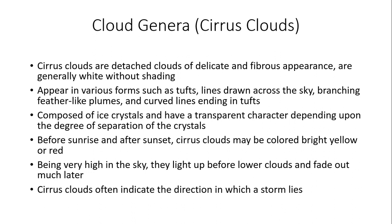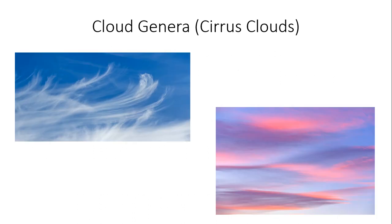Cirrus clouds often indicate the direction in which a storm lies. Here are some examples of cirrus clouds. You can notice the wispy, feathery look — very feathery and amazing on a summer or winter day. In the lower right, you'll notice the pink and purple hue caused by the sun's light at sunset. As the sun descends below the horizon, it illuminates these clouds because they're so high up in the sky.